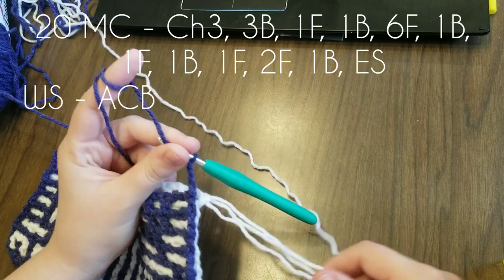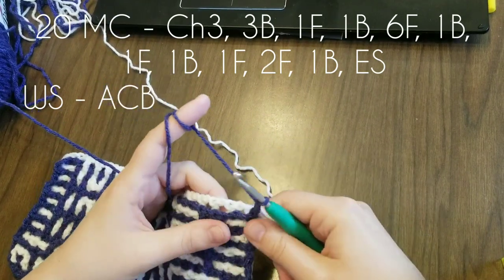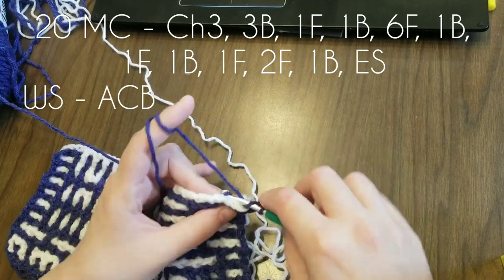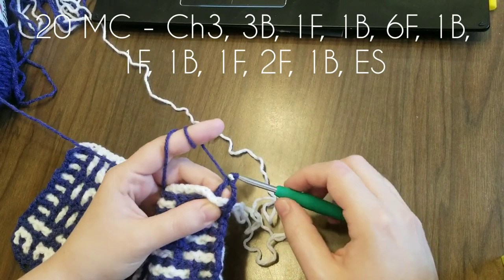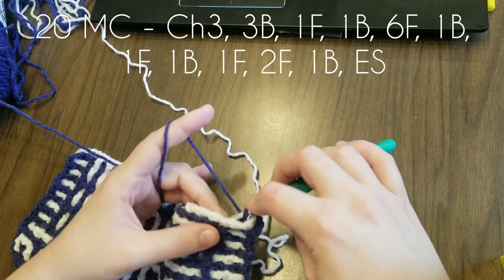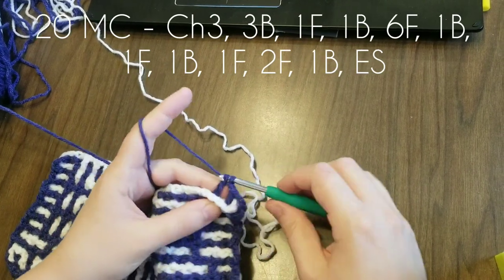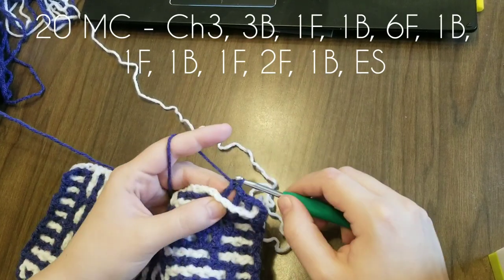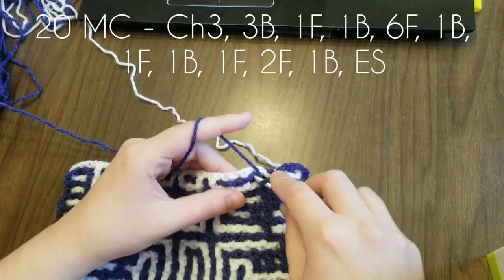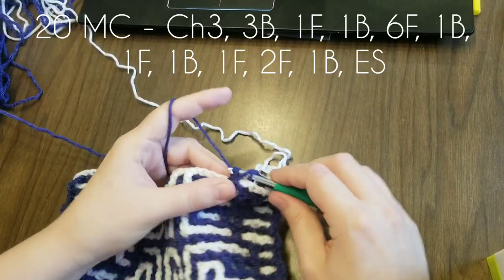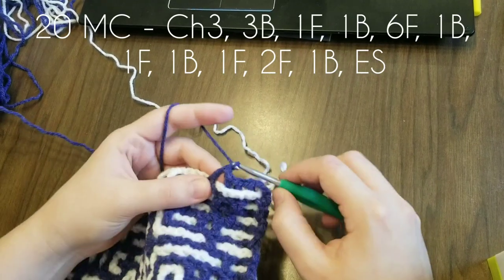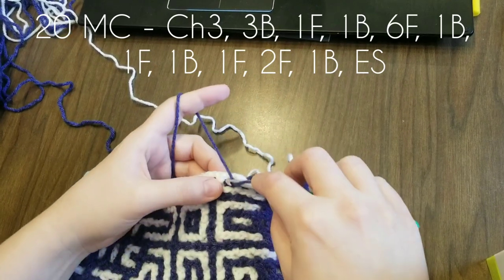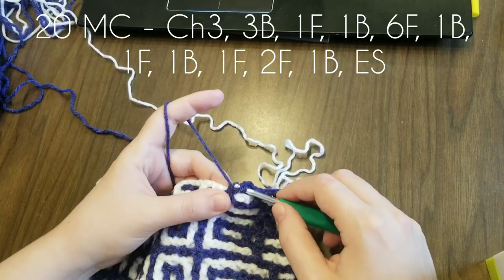Our accent color, that's white for me, I've got it off to the side. You could use a stitch marker; I don't want to, so I'm just hanging on to it. Now we'll do three in the back—one, two, three—one front, one back. Six in the front.